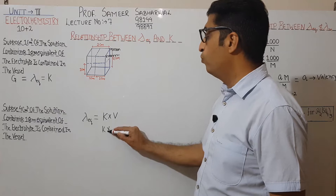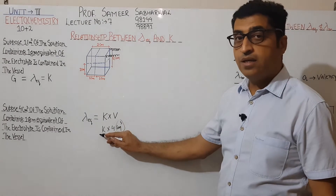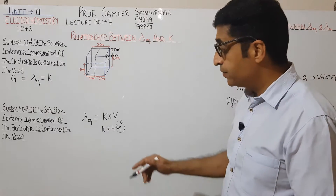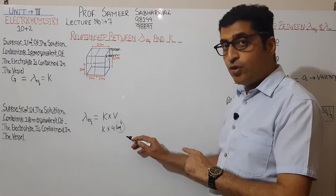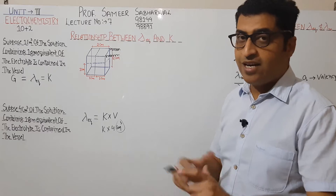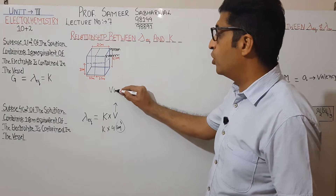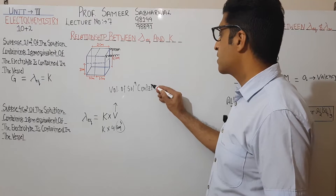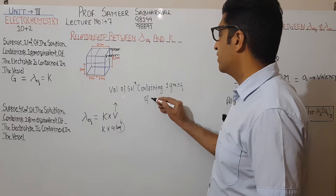Therefore, lambda equivalent equals K into 4, that is K into 4 centimeter cube. The conductance of 1 centimeter cube is K. So if I have 10 centimeter cube of solution containing 1 gram equivalent, then lambda equivalent equals K into 10. The final result comes out to be lambda equivalent equals K into V. This is the relationship between lambda equivalent and K.